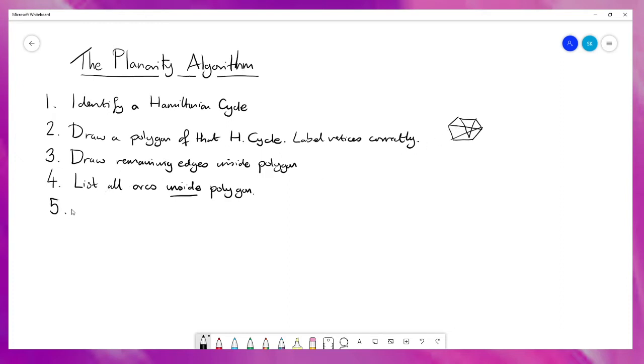So step five, and this is where it starts to get quite fiddly and technical. You pick any arc with no label. Now, at the start, the first time you do this, everything will be unlabeled. But as you'll see later on, we're going to put labels on arcs. So you choose any arc with no label that is inside the polygon. So that's in your list in part four, and label it I. What that means is you're deciding that that arc is going to go inside the polygon. At this point, if every arc in your list is labeled, the graph is planar.